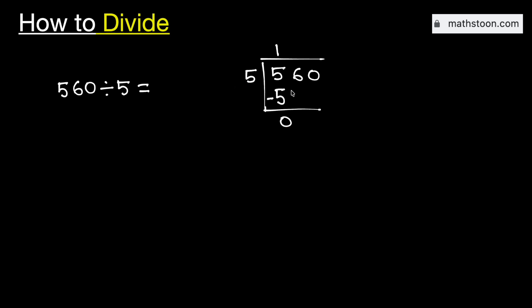As 0 is less than 5, we need to bring down this adjacent 6 here. Now this is the number 6, so remove this 0.